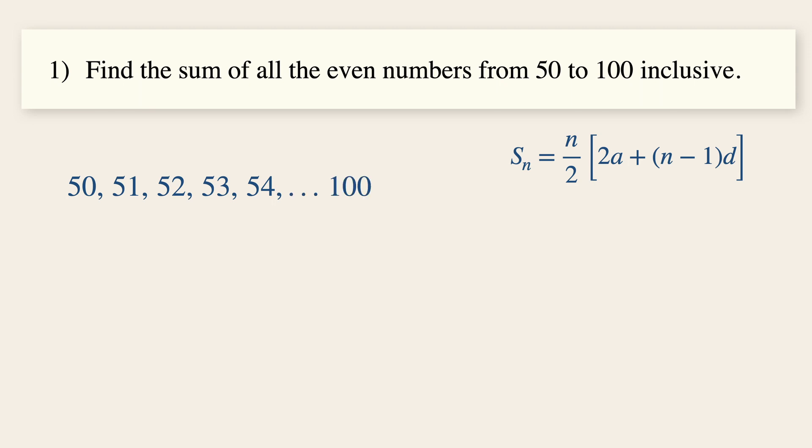The key idea is to find what are the exact values of a, d and n, so that we could use this formula right here. So these are the even terms that we want. And the first term is actually 50.